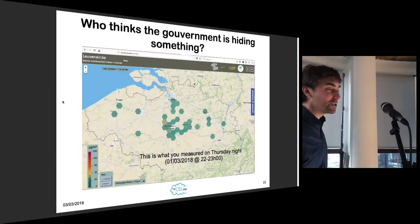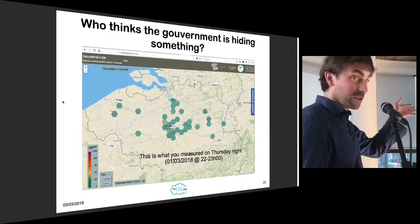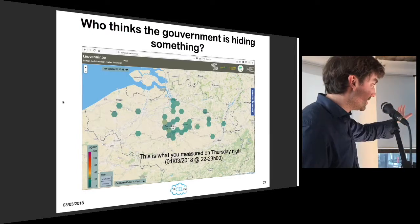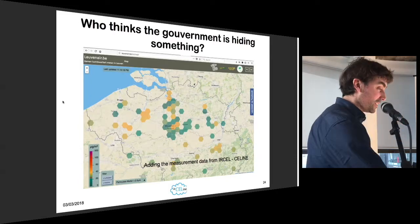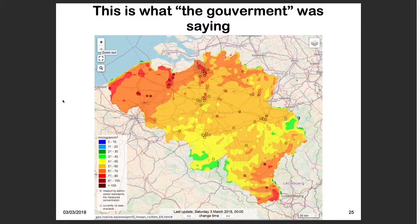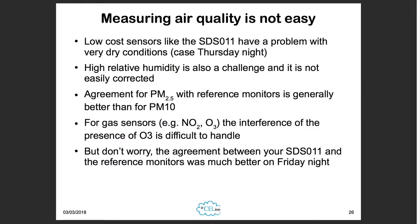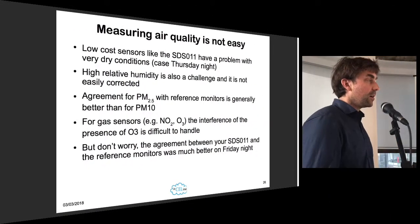Thursday night, this is what you were measuring within Leuvenair — all looked good. Now we add the stations from the regional networks, and this is actually what the situation was. For people who think the government is trying to hide something — no, it's not that. It is more a matter of accepting the fact that measuring air quality is a difficult thing. Achieving a good measurement quality is already a struggle.